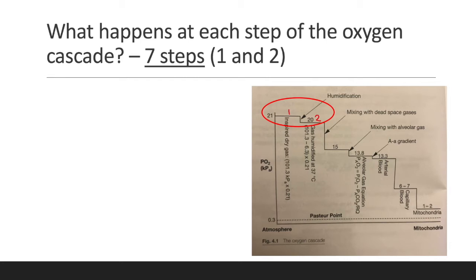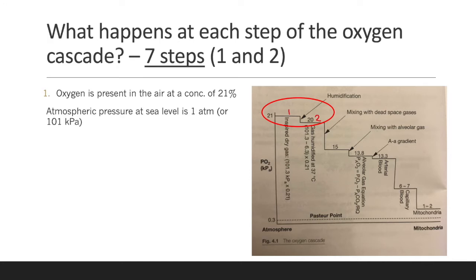In this presentation, I have split the cascade up into seven steps in order to make it easier to follow. Step 1: oxygen is present in the air at a concentration of 21%. Atmospheric pressure at sea level is one atmosphere or 101 kPa. Inspired PO2 is therefore 21 kPa.